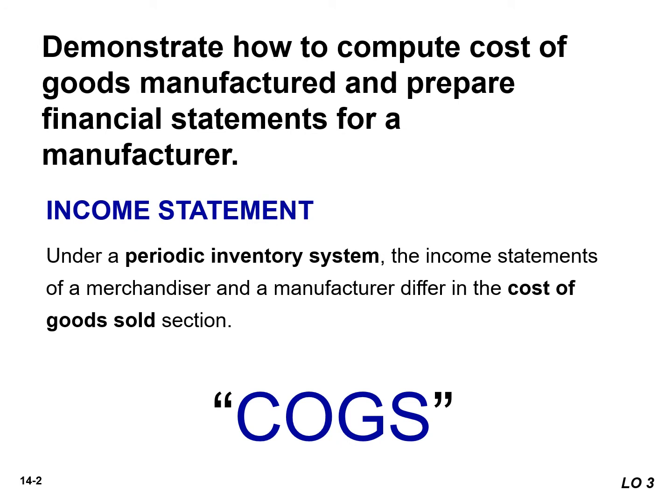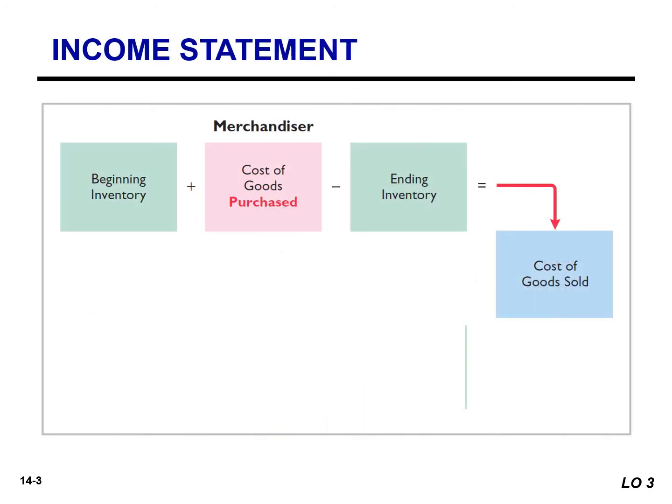One of the differences is going to be in the income statement, more specifically in the cost of goods sold calculations. In Accounting 1, we discussed the calculations of the cost of goods sold for a merchandiser. You're going to add your beginning inventory to the cost of goods purchased and subtract the ending inventory to arrive at cost of goods sold.